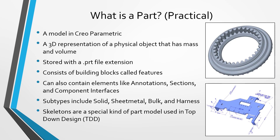When you create a part, there are four different subtypes. You can create solid parts, and that's probably the most common. Then you also have sheet metal parts, which are a little different than solid parts because they have tools that enable you to create parts that are usually thin-walled with a constant thickness.